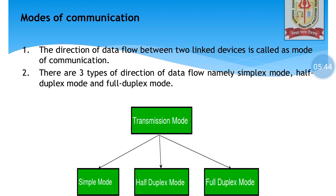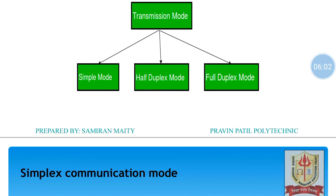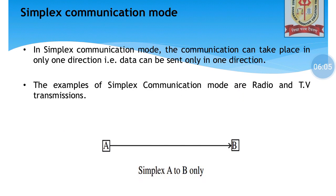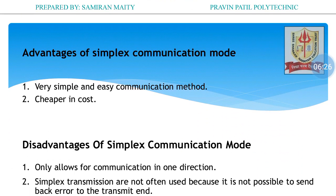Apart from that, we have modes of communication. The direction of data flow between two linked devices is called a mode of communication. There are three types of direction of data flow: simplex mode, half-duplex mode, and full-duplex mode. Regarding simplex communication mode, communication can take place in only one direction — data can be sent only in one direction. The examples are radio and television transmissions. We could only hear from a radio and only watch from a television set; we cannot send any data back via radio or television.